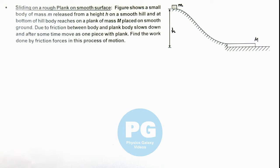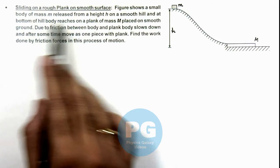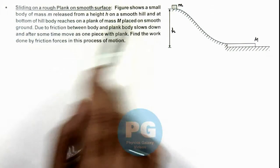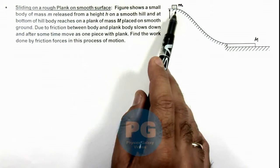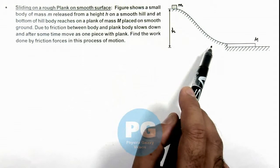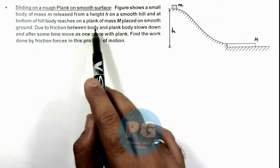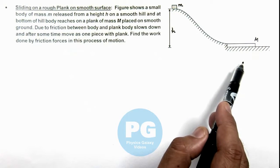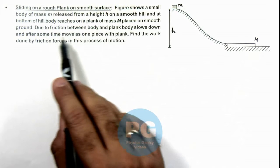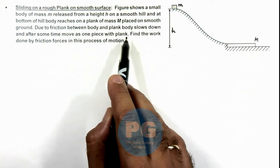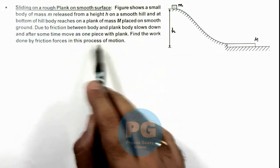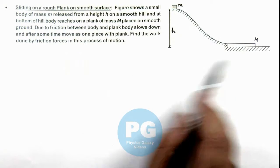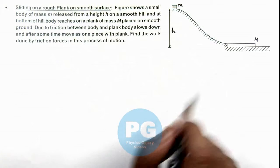In this situation we'll analyze the sliding on a rough plank on a smooth surface. Here, you can see the figure shows a small body of mass m released from a height h on a smooth hill. And at the bottom of hill the body reaches on a plank of mass capital M placed on a smooth ground. Here, it is saying due to friction between body and plank, body slows down and after some time move as one piece with the plank. We are required to find the work done by friction forces in this process of motion.